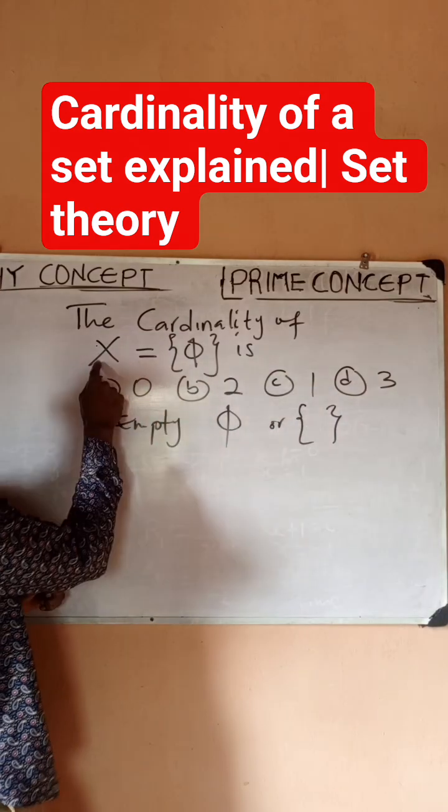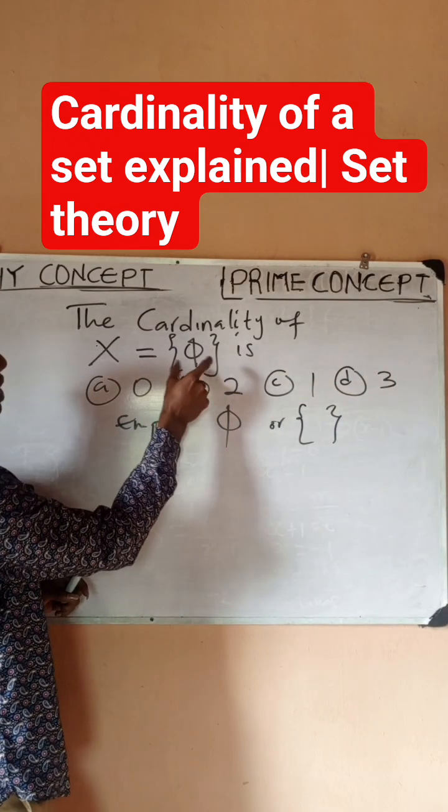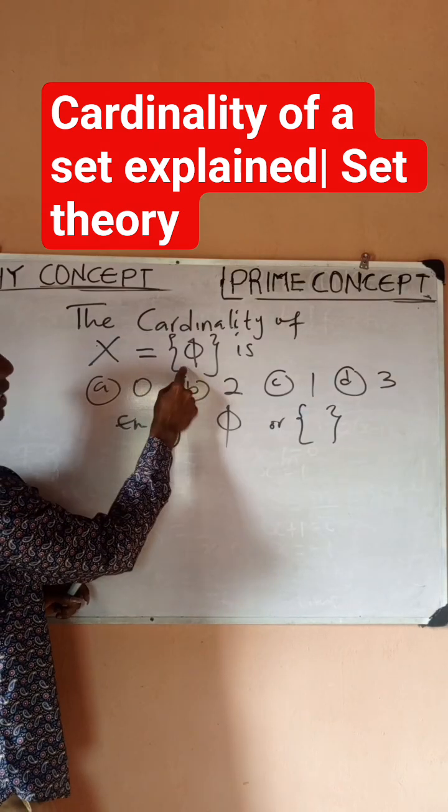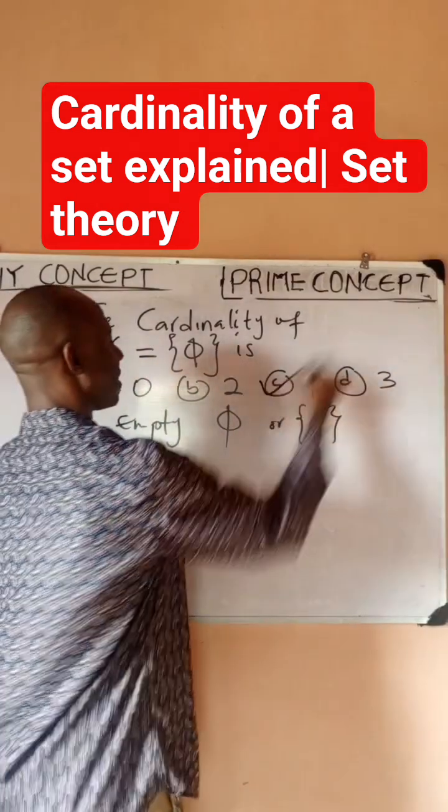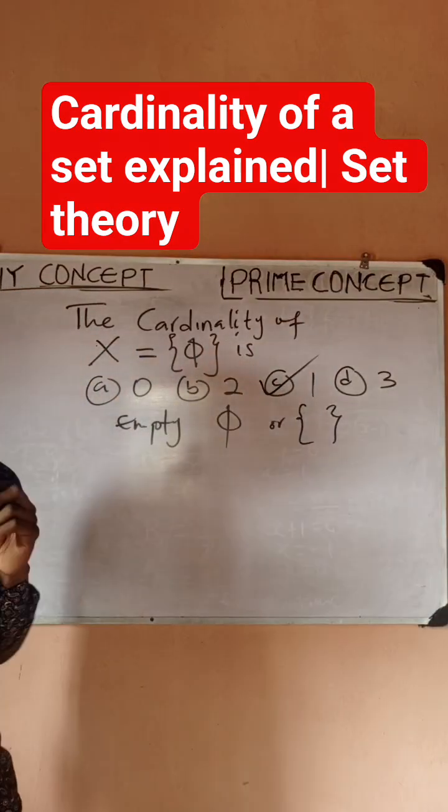So very quickly, X has how many elements? One. So it means that the cardinality of the set X is actually going to be what? One. So it has one element and this is the correct answer.